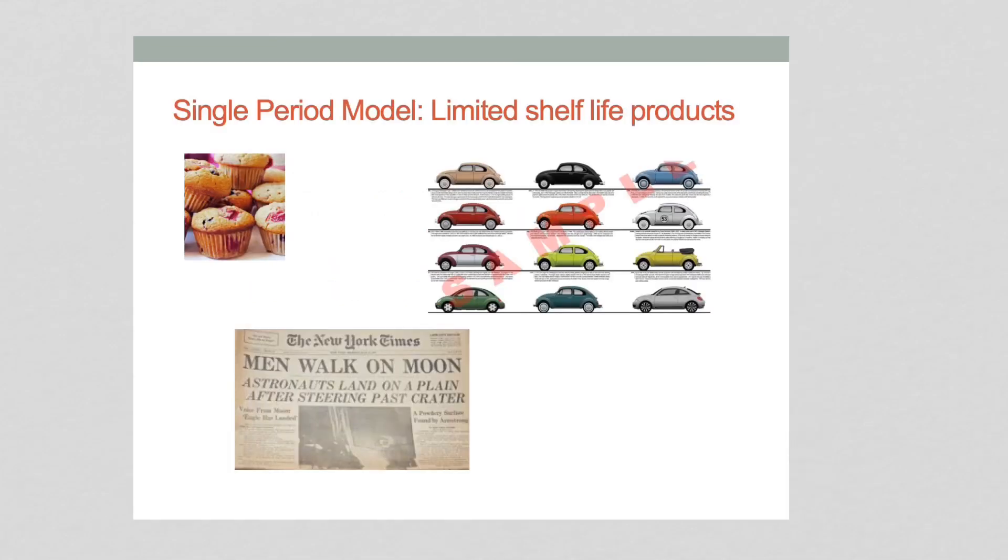This is the second model. The model we're going to look at here, which is probabilistic, is known as the Single Period Model. This model is really interesting. It was developed several decades ago, and it has to do with limited shelf life products. Let's take a look at this, for example.